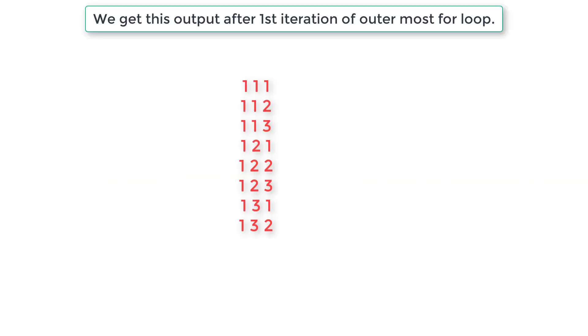Here is a snippet of the output. Observe that the first column is all ones. The second column is 1 1 1 2 2 2 3 3 3 and so on. The third column is 1 2 3 1 2 3 1 2 3 and so on.